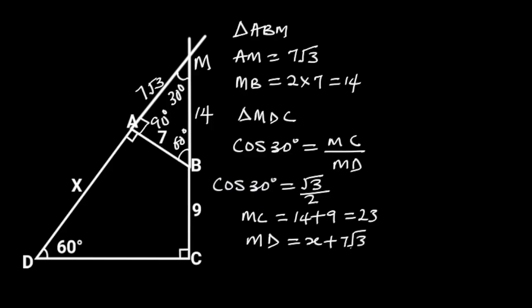Substituting these values in this formula, we will have root 3 over 2 is equal to 23 over X plus 7 root 3.